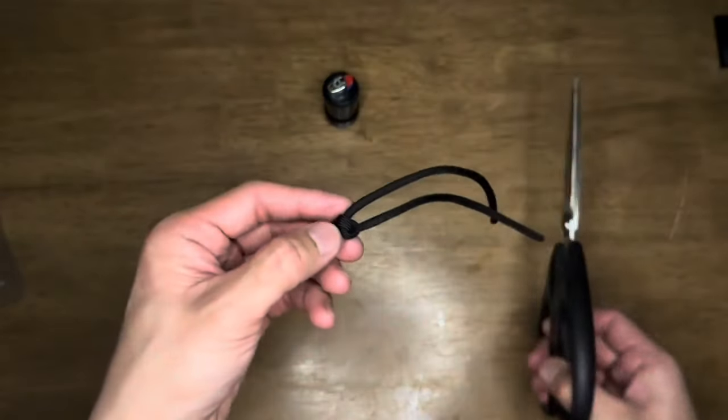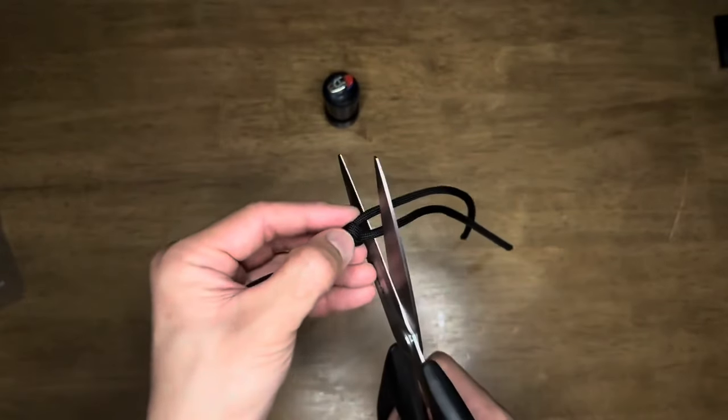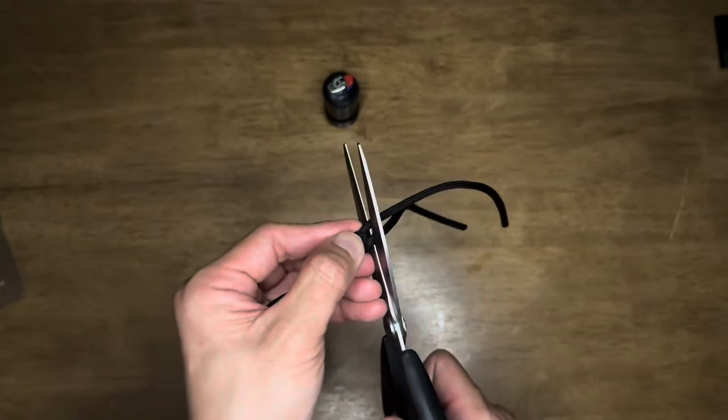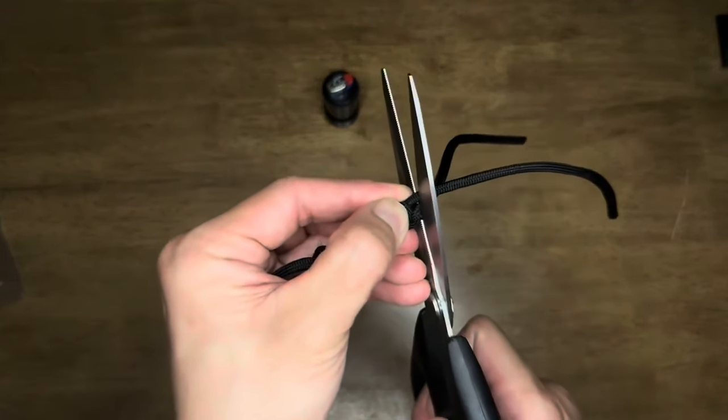Take the scissors and cut the remaining rope. We're going to have to burn the ends, so leave a little bit of rope for it to melt on itself.